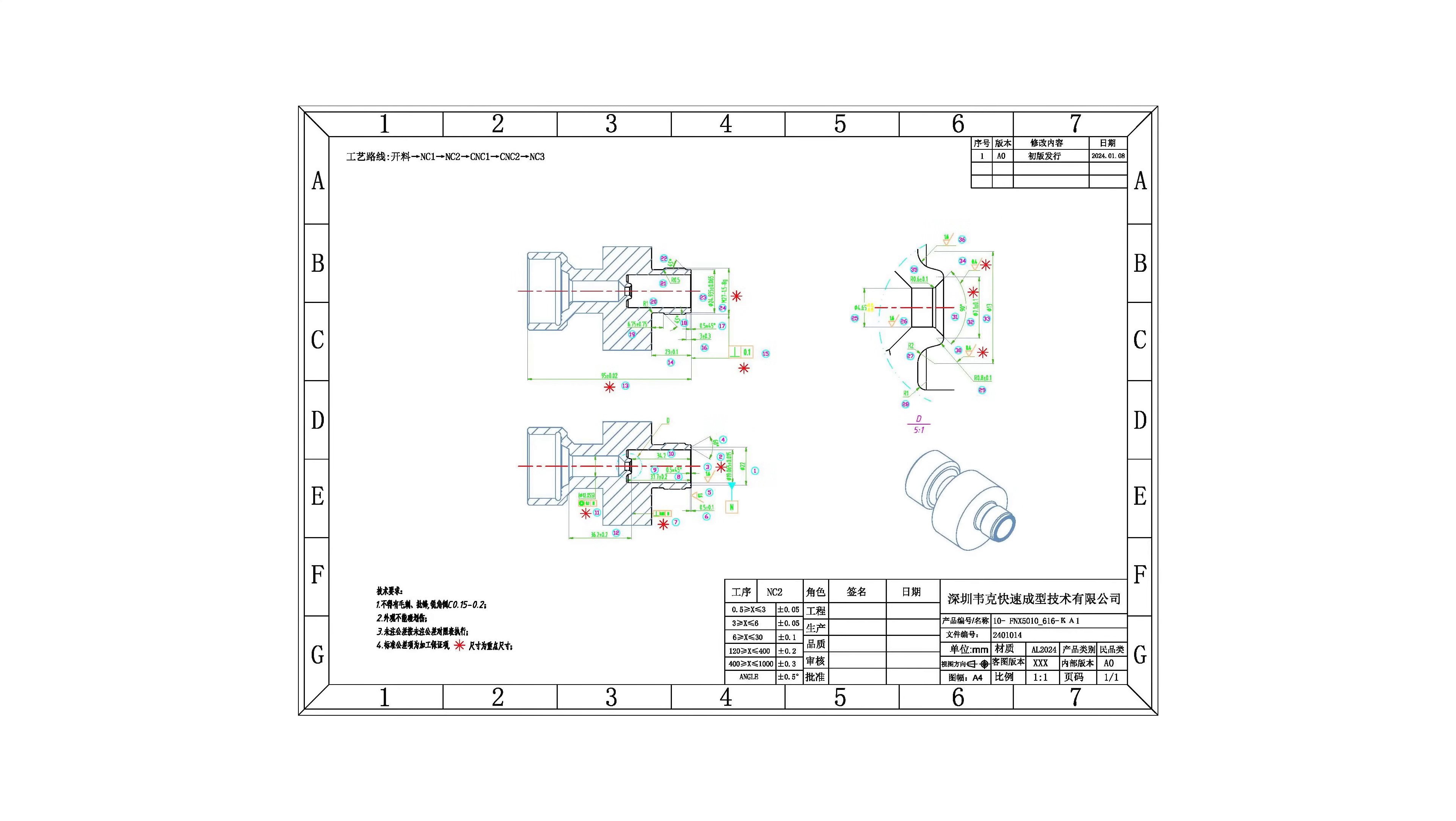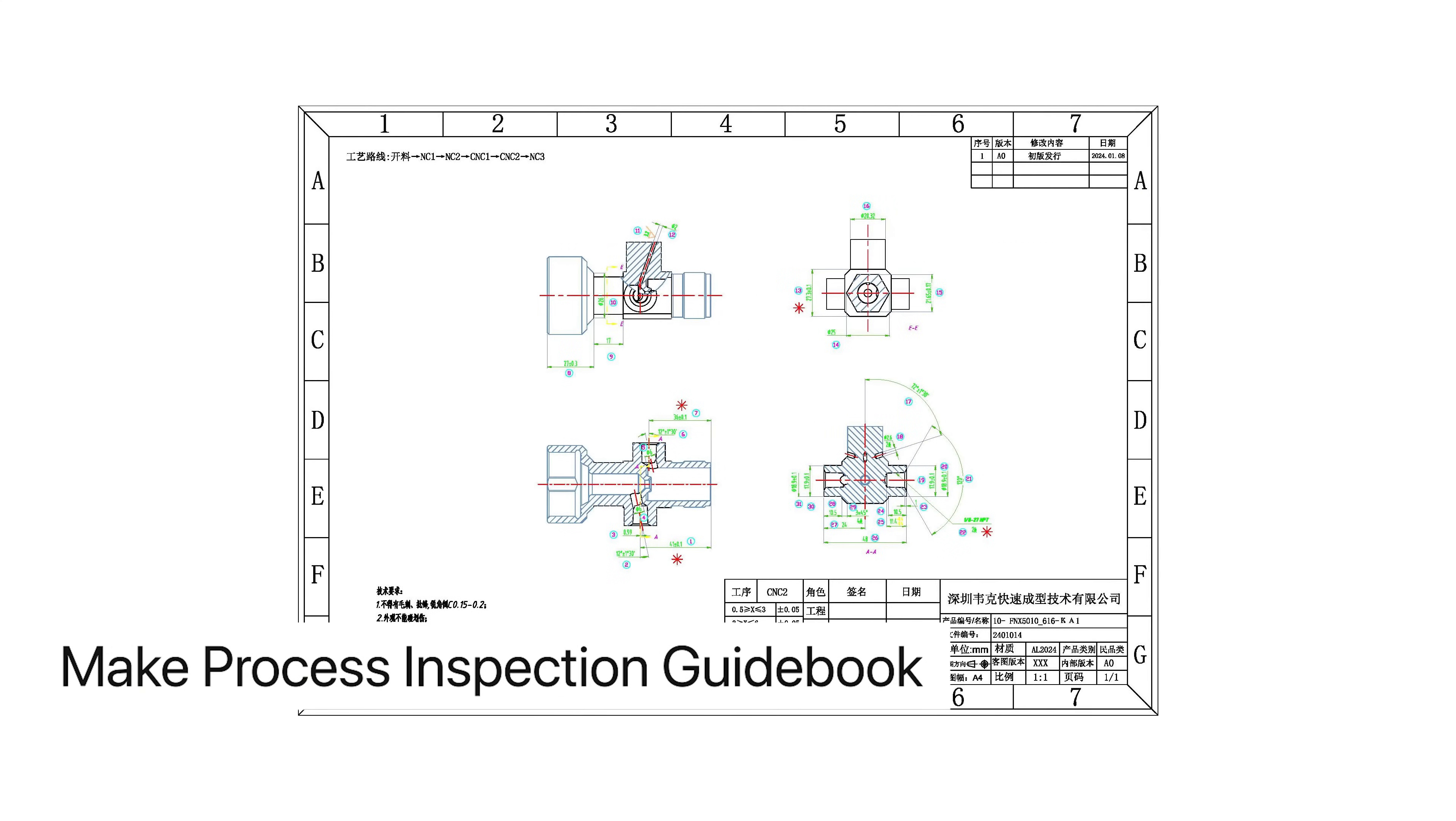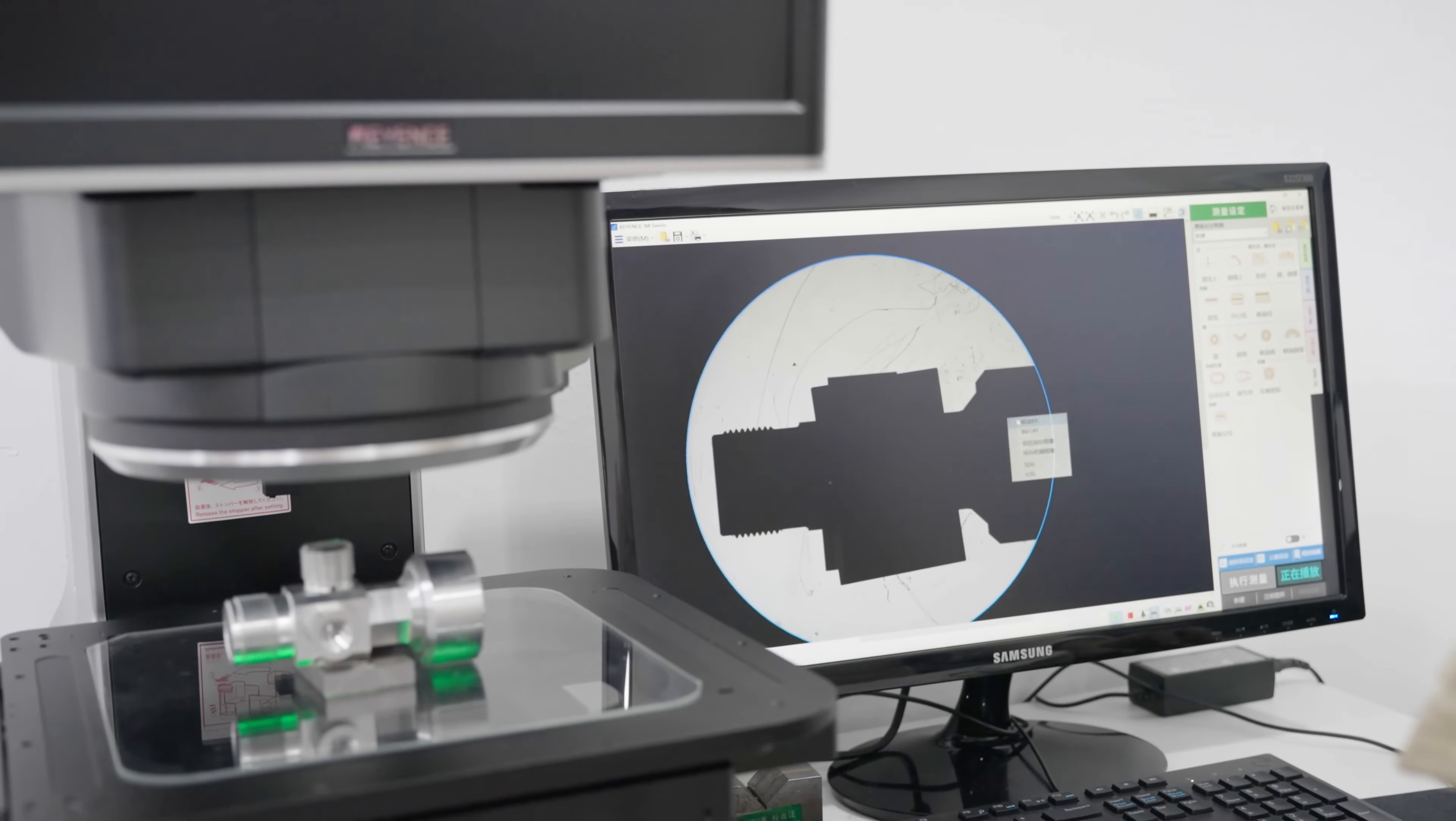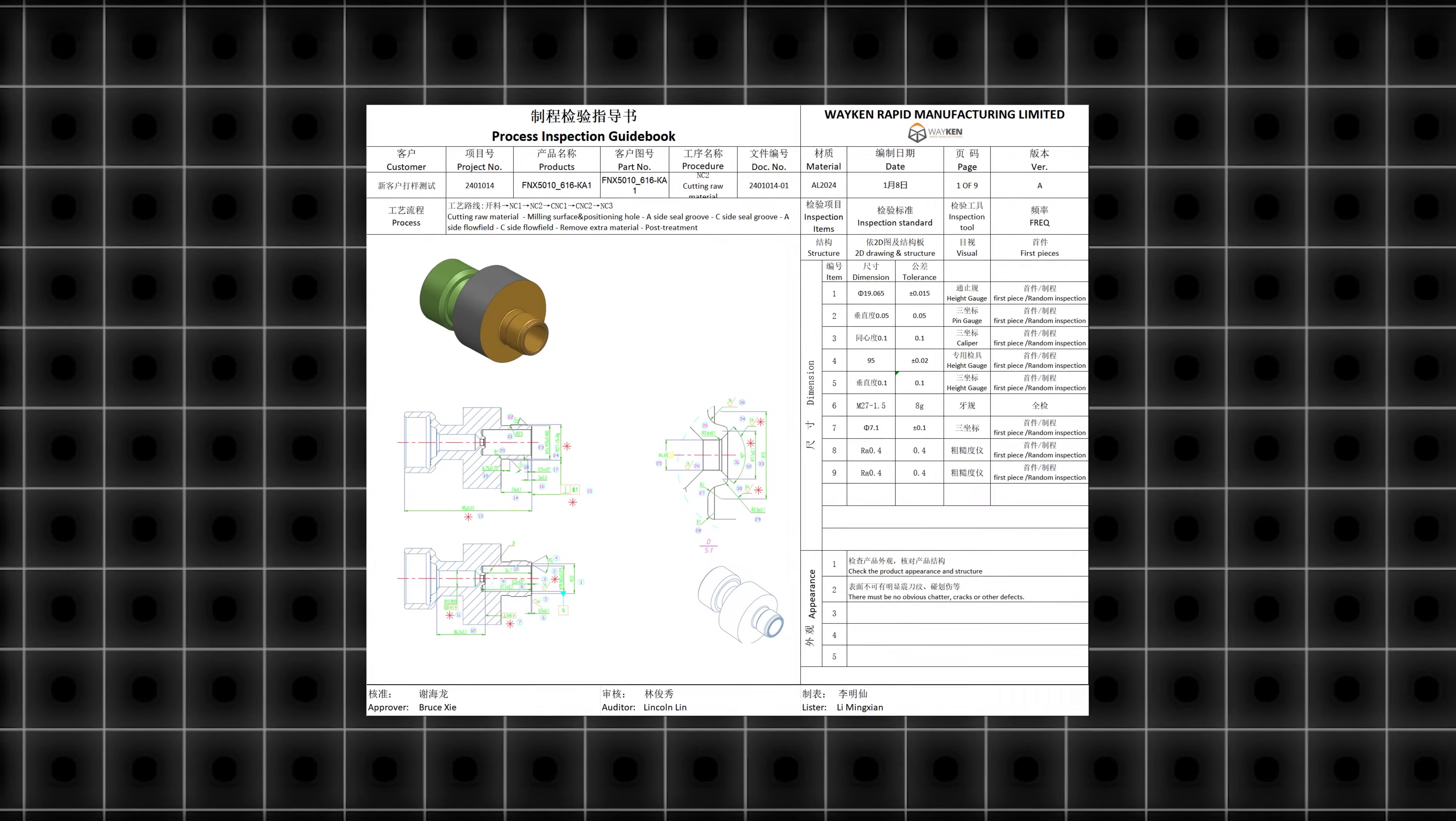Second, make process inspection guidebook. After selecting the inspection facility for each crucial dimension that needs to be controlled, the process inspection guidebook gets formed.